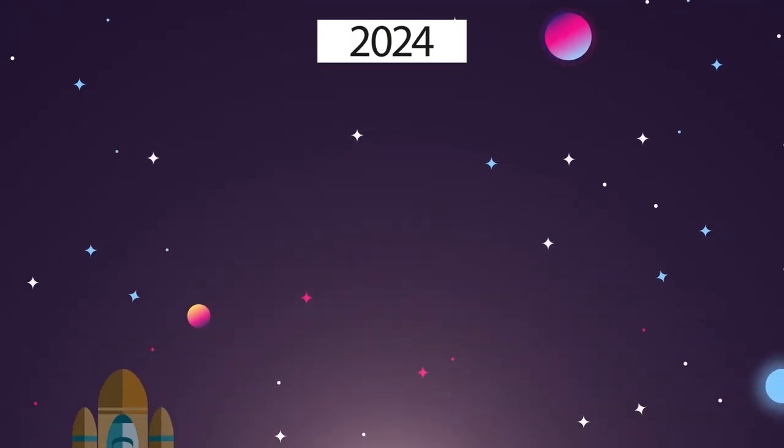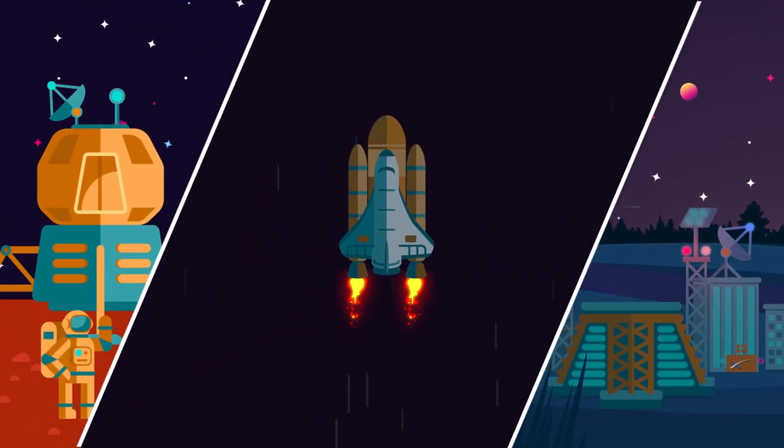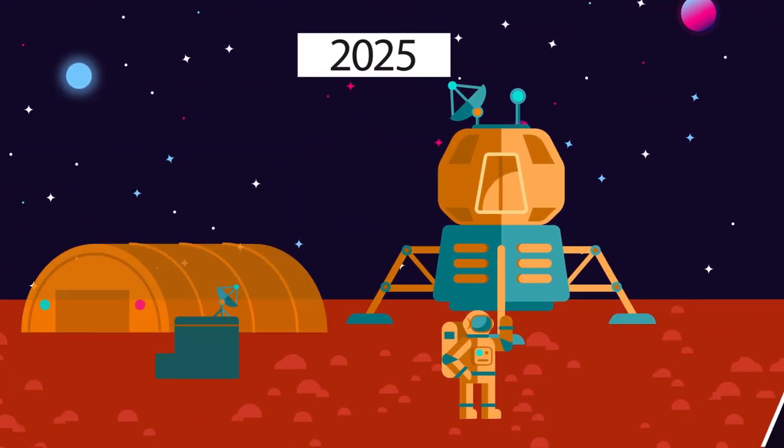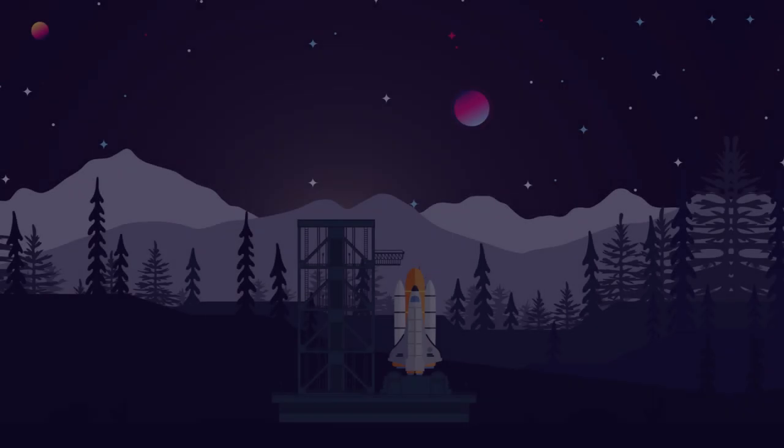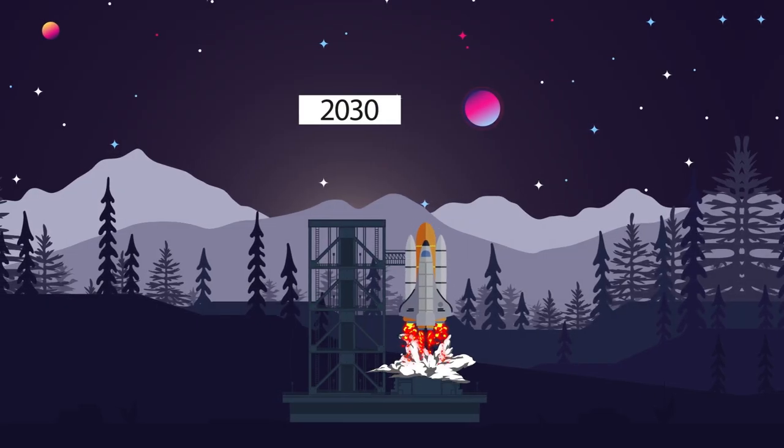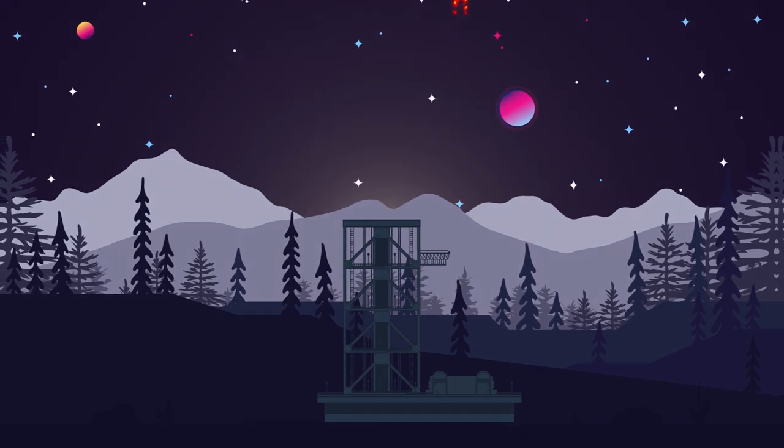SpaceX will launch the first ever manned mission to Mars in 2024, and it will reach its destination in 2025. So if we're lucky enough, we will be able to witness the first ever manned landing on Mars. And in 2030, NASA will launch their first manned mission to Mars. So if SpaceX fails, NASA will be the one entering history.